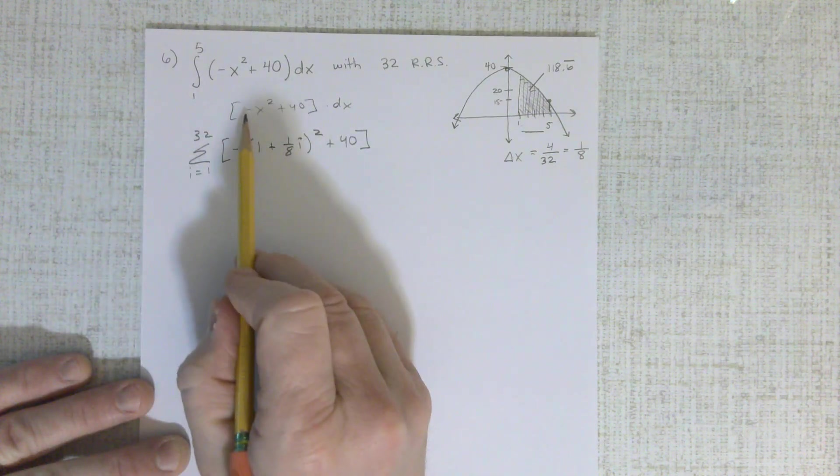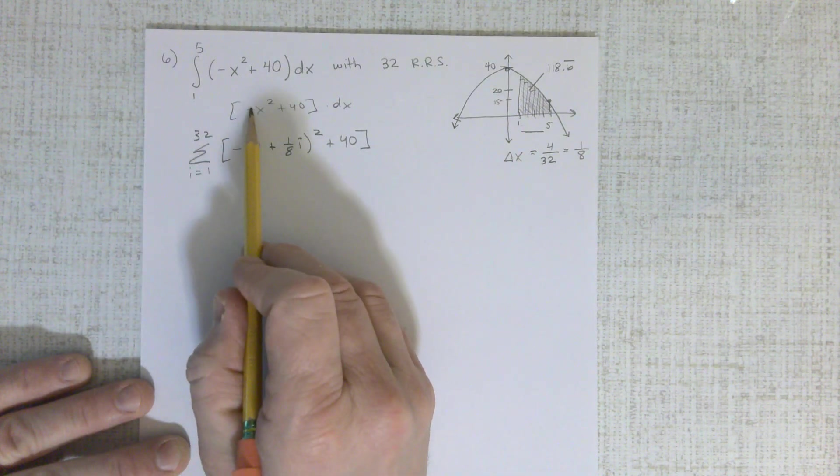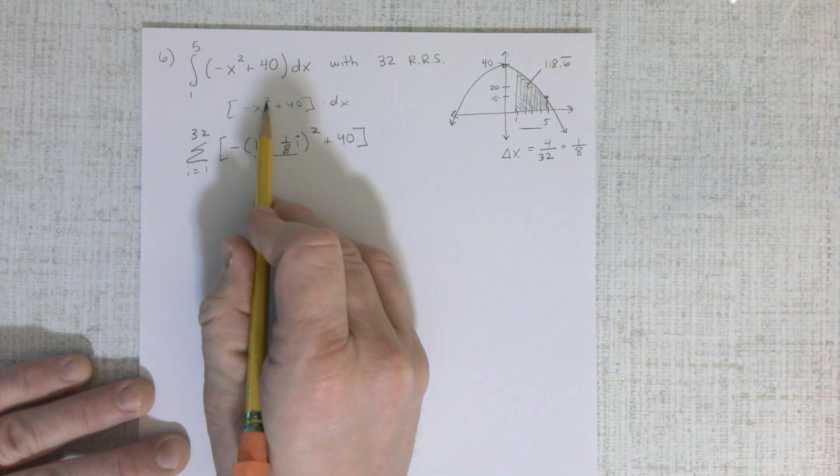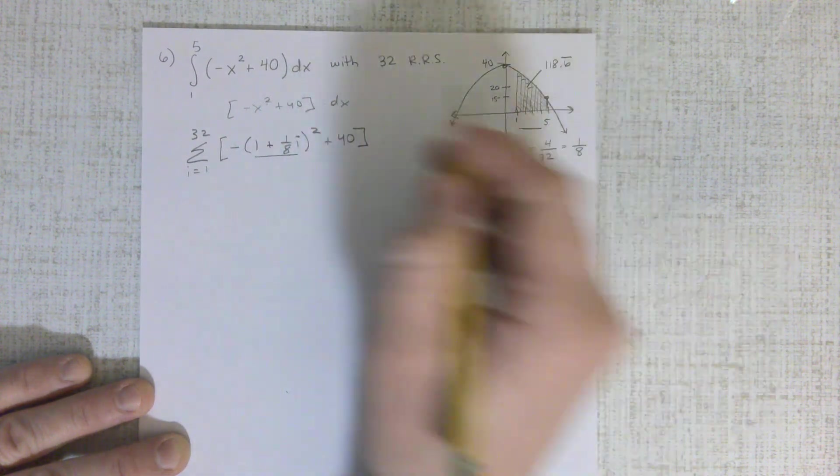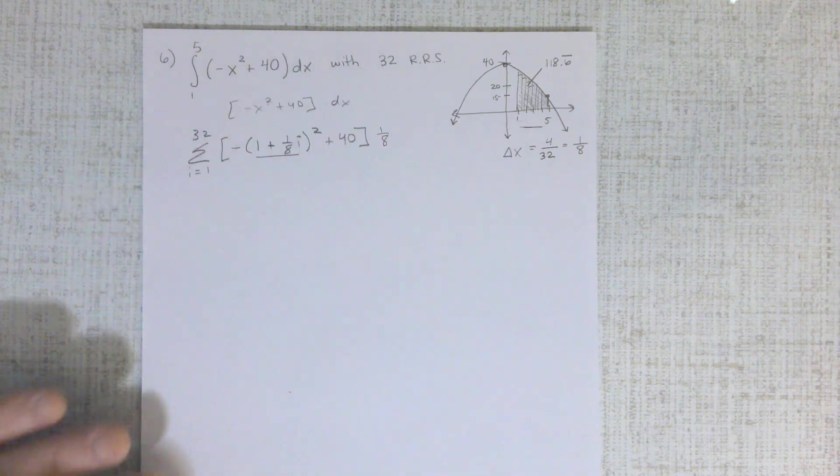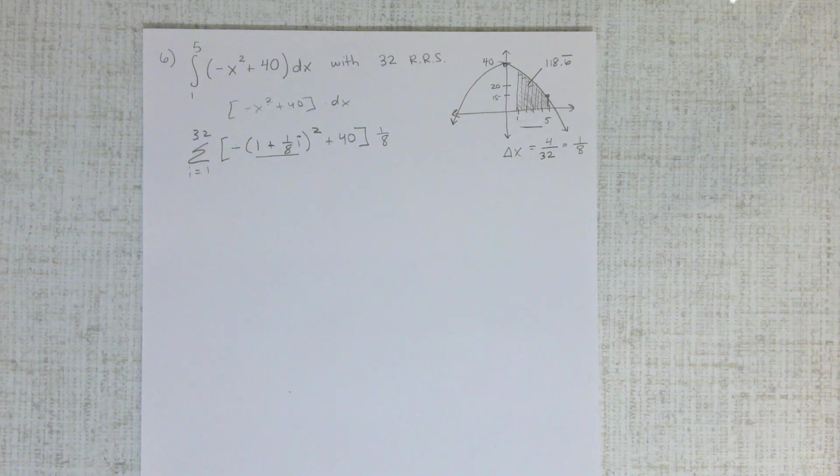So everything lines up. Parentheses, or sorry, negative. There's my x. That's being squared plus 40, and then dx is 1 eighth. Now we have it in a summation formula.